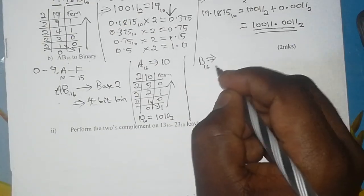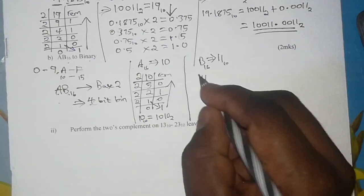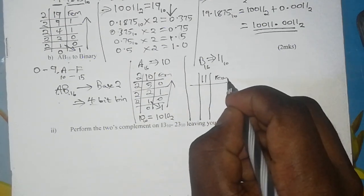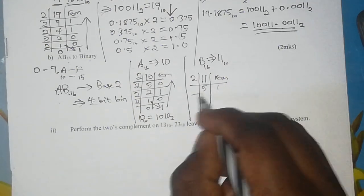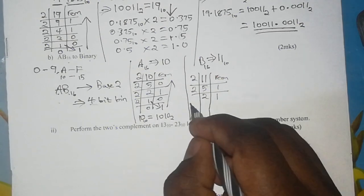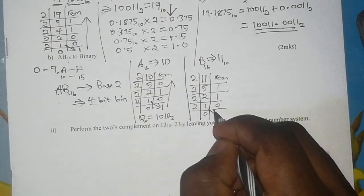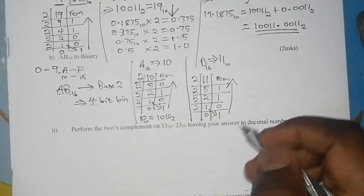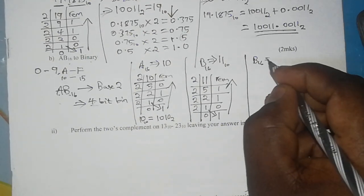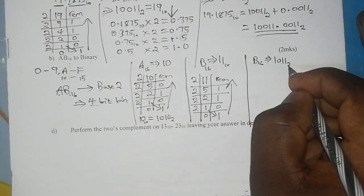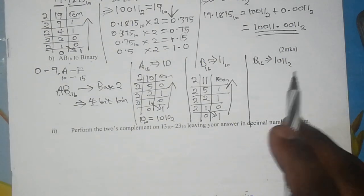Moving on to B: B is 11 in base 10. Converting 11 to binary — 2 into 11 is five times with a remainder of 1, 2 into 5 is two times with a remainder of 1, 2 into 2 is one time with no remainder, 2 into 1 is zero times with a remainder of 1. Reading the remainders backwards, B is equivalent to 1011 in binary. Make sure you have 4 bits: 1, 2, 3, 4. That is correct.